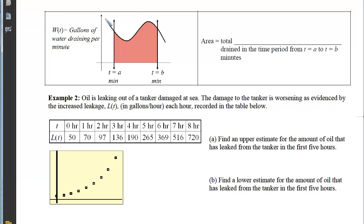With our third illustration here, we can see that our variable rate is representing the gallons of water draining per minute. So if I choose a sample rectangle, the width will be measured in minutes, and the height will be measured in gallons per minute. So if I multiply width times height, the minutes will cancel, and I'll be left with the total number of gallons of water that drained in the time period from t equals a to t equals b.